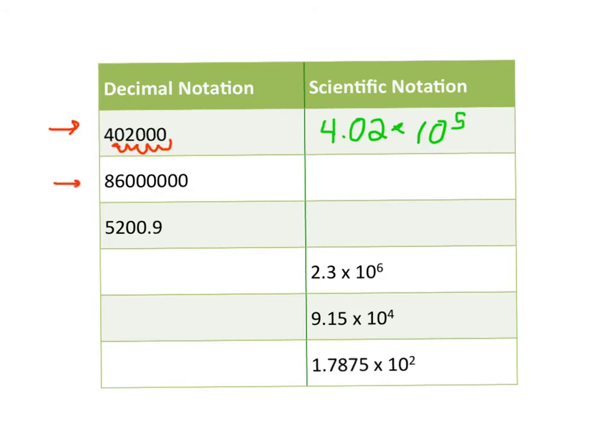The number in row number 2 needs 1, 2, 3, 4, 5, 6, 7 hops of the decimal to get to a number between 1 and 10. And so the answer will be 8.6 times 10 to the 7th.